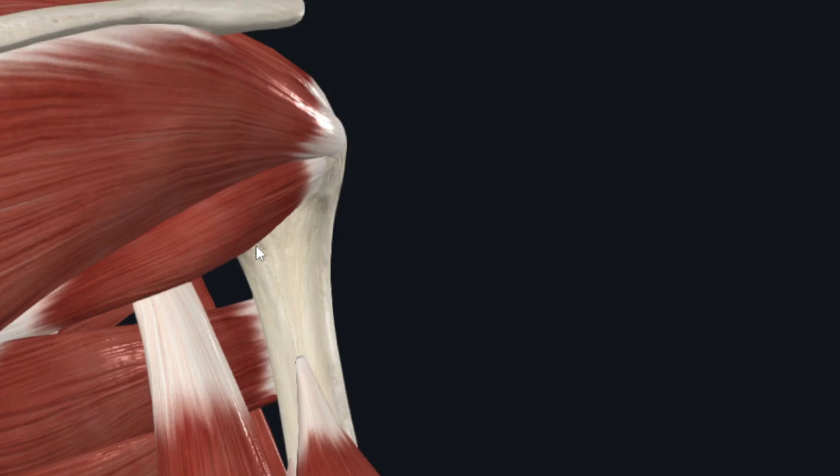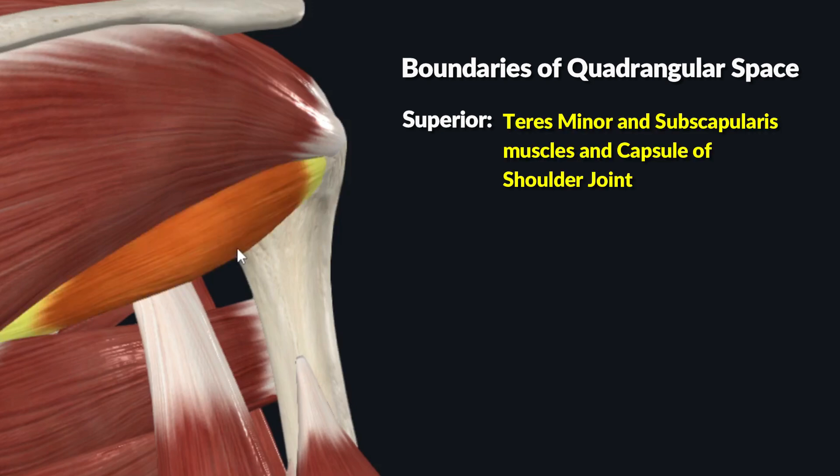The boundaries of this intermuscular space are: superiorly it is bounded by the teres minor and subscapularis muscles and the capsule of the shoulder joint, while inferiorly it is bounded by the teres major muscle.